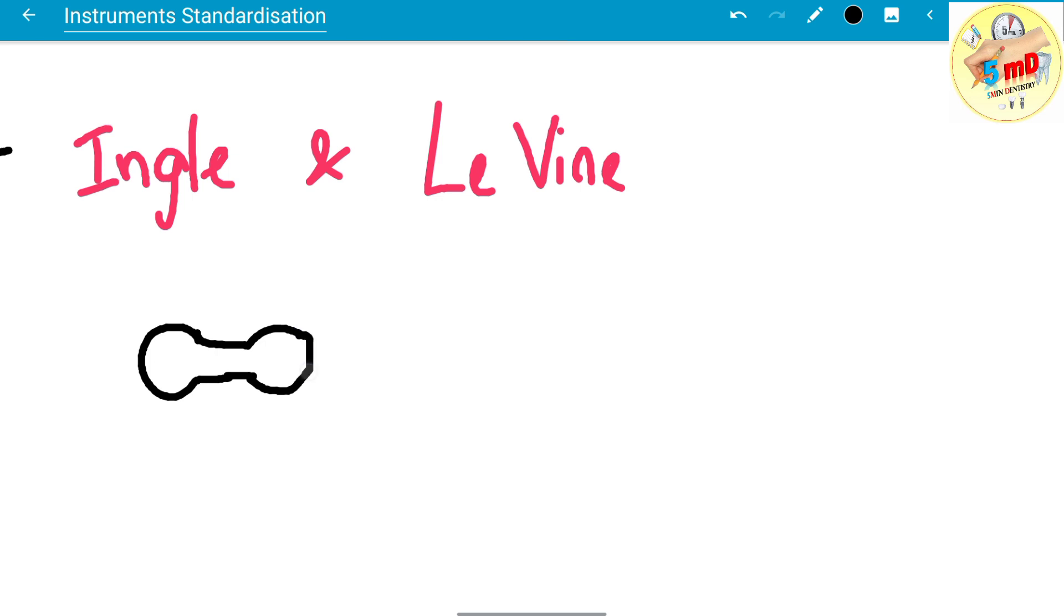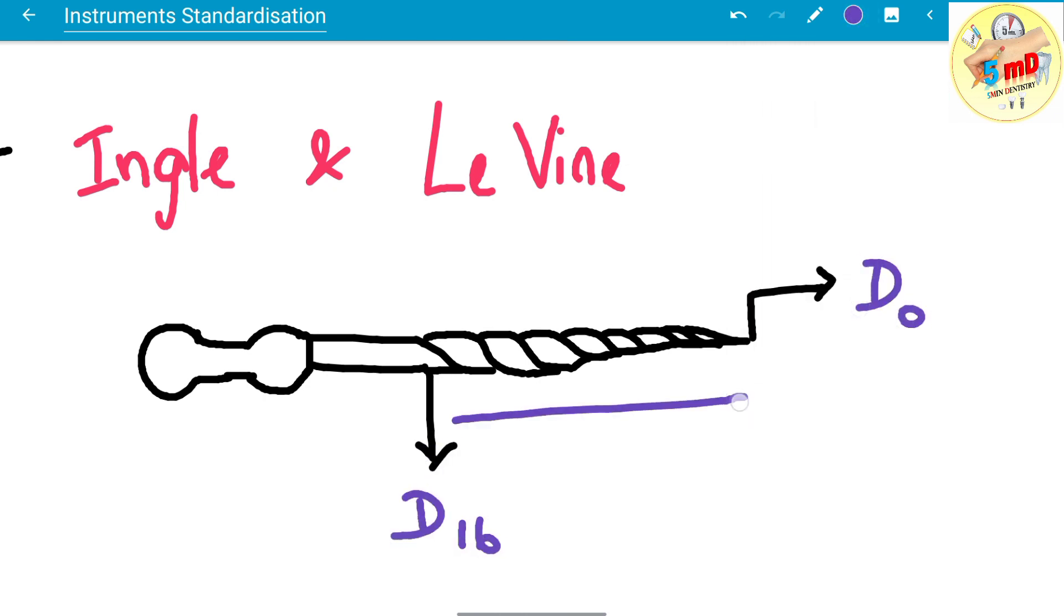Here we will consider a file where the working space is usually 16 mm in length. Therefore, the diameter at the tip of the instrument is considered as d0, whereas the diameter after the 16 mm, that is the end of the working space, is called d16.